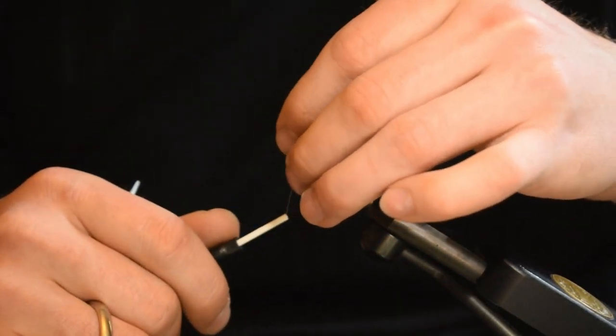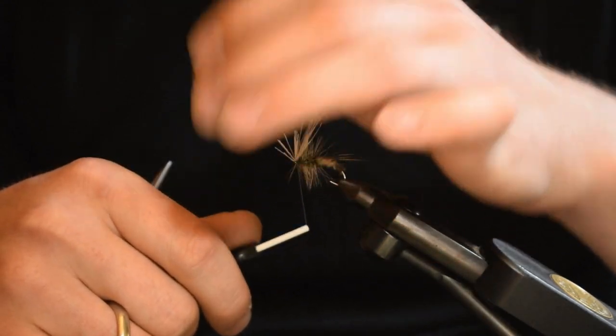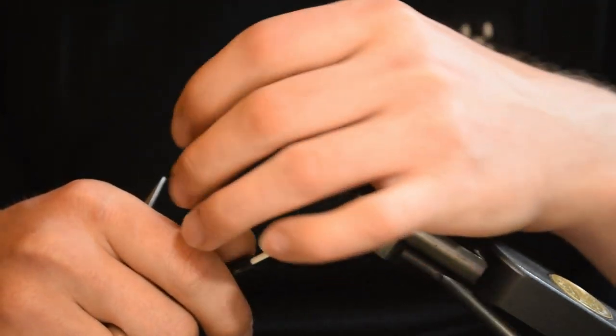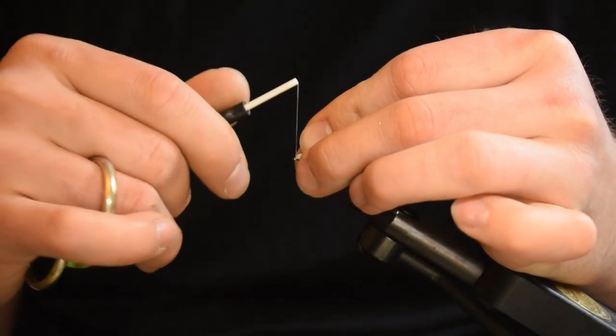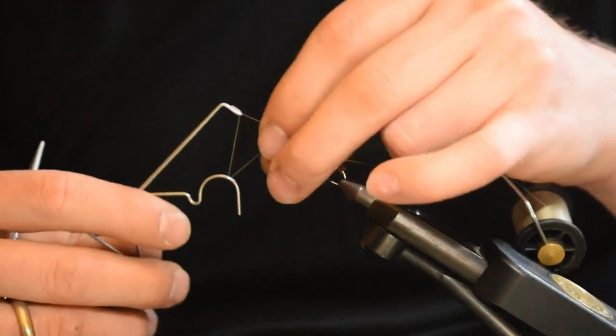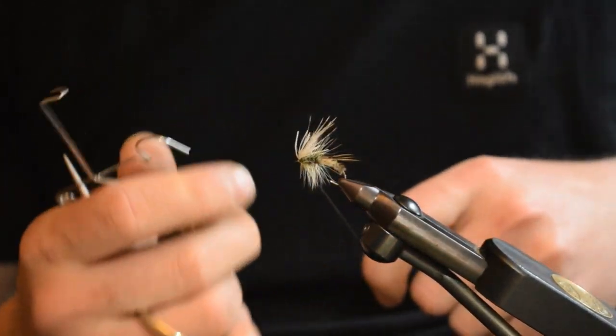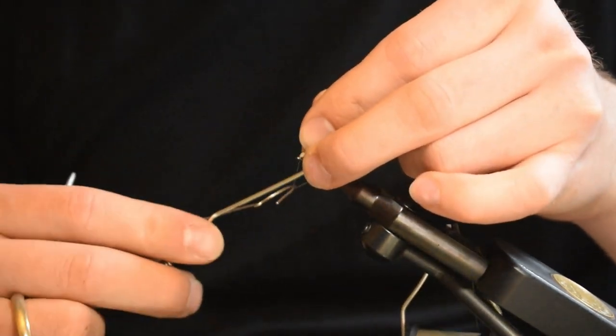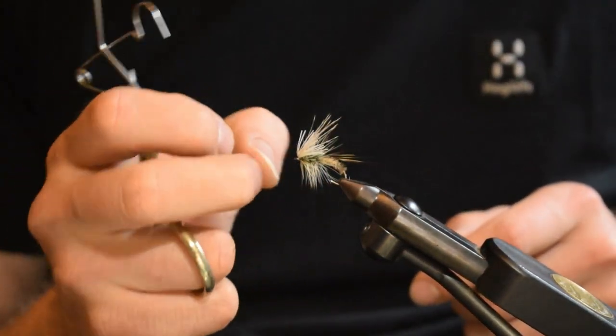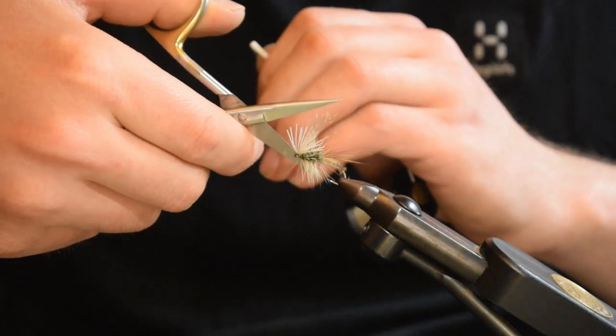When I tie, I just take a couple of turns up and forward and just catch in between some of the fibers, the hair fibers, the tag ends. In front of the thread, a couple of turns. Do a whip finish and just an extra one. Pinch it a little with my fingernails.